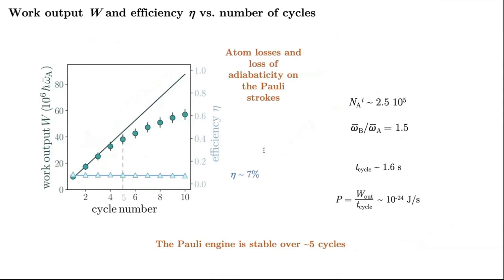Finally, because the idea of an engine is to run it over and over again, we check that the Pauli engine or the Pauli cycle is stable if we run it 5 times before significant atom losses spoil the work output. The efficiency is more or less constant, around 7%, but the work output deviates from the expected one.